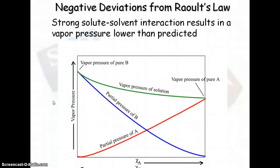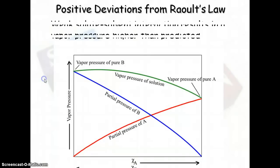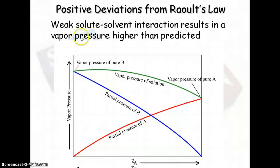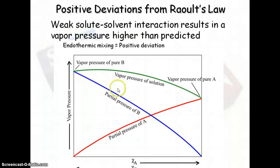You can have deviations from Raoult's Law. When you have strong solute-solvent interactions — high IMFs — you're going to have a lower vapor pressure than predicted. The stronger the IMFs, the harder it will be for molecules to escape from the liquid phase into the vapor phase, giving a lower vapor pressure. Positive deviations occur when you have weak IMF solute-solvent interactions, giving a higher vapor pressure than typically predicted. The fewer the IMFs, the higher the vapor pressure, because more molecules escape more easily and exert a higher pressure on the container.